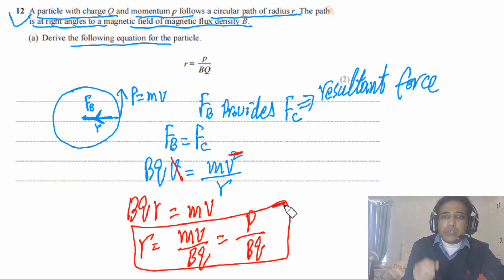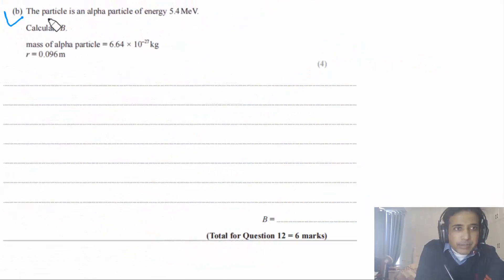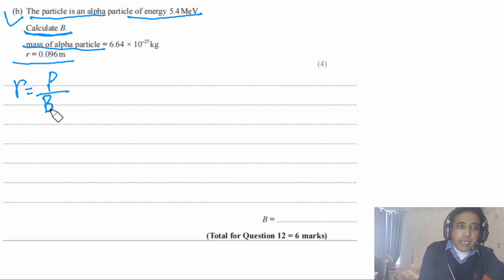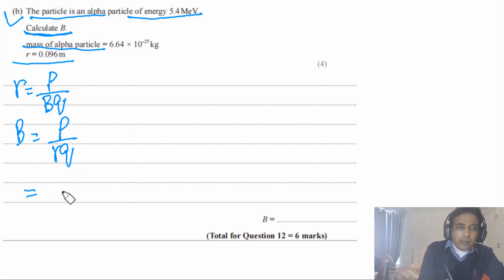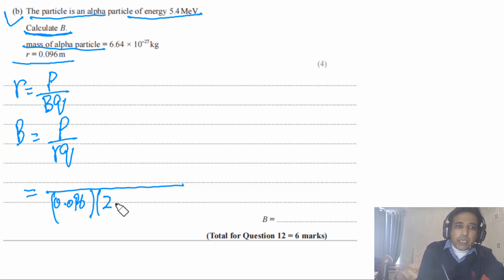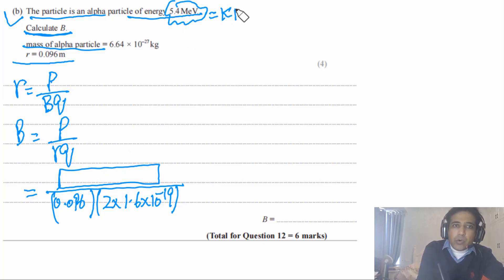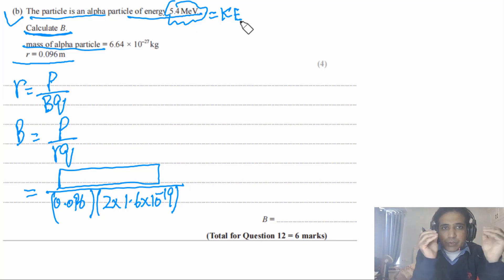This is a typical question seen in many past papers. Part B says the particle is an alpha particle of energy 5.4 MeV. Calculate the magnetic flux density B. The mass of the alpha particle and R are given. From the last part, R = P / BQ, so B = P / (RQ). We have R = 0.096 m and the charge on the alpha particle is 2e = 2 × 1.6 × 10⁻¹⁹ C. We need to find the momentum, so we must link kinetic energy with momentum.